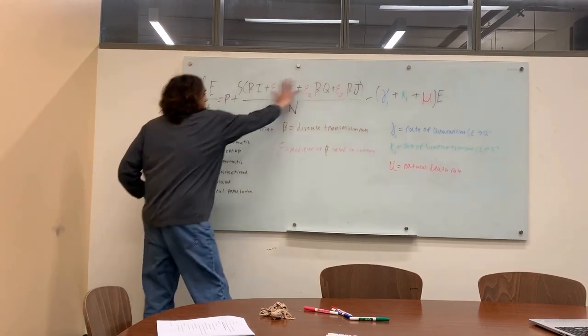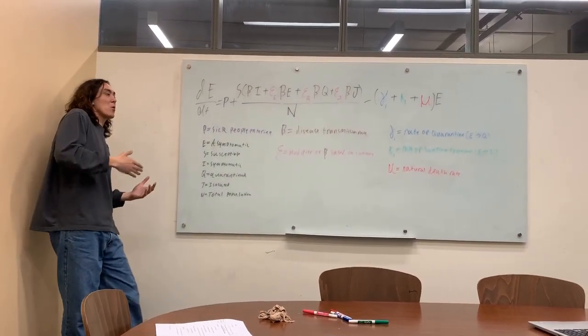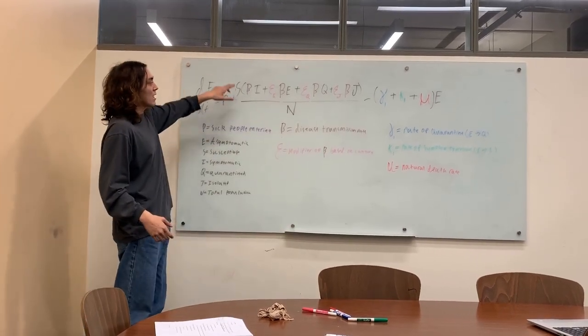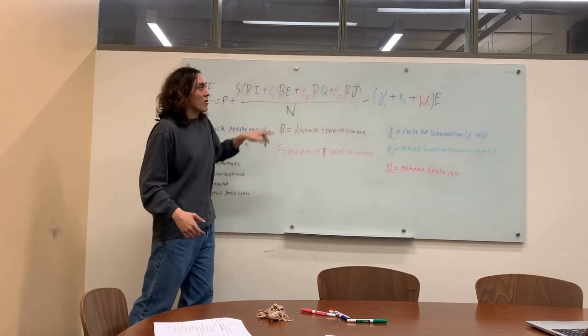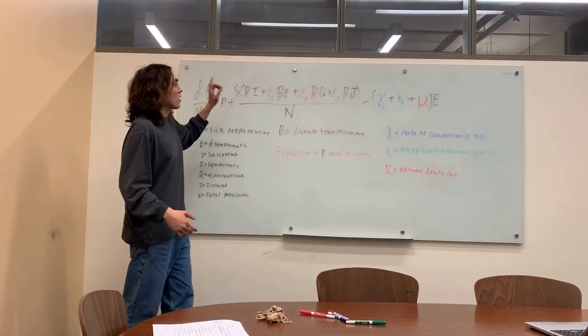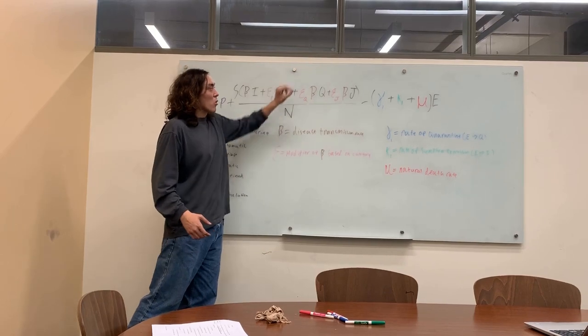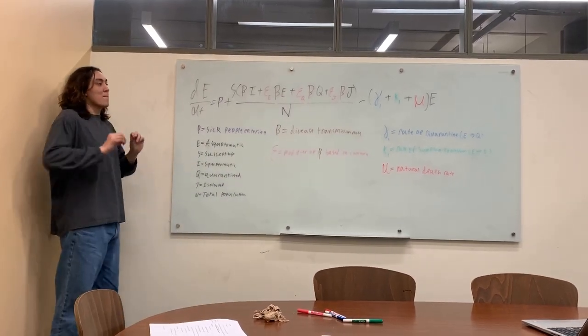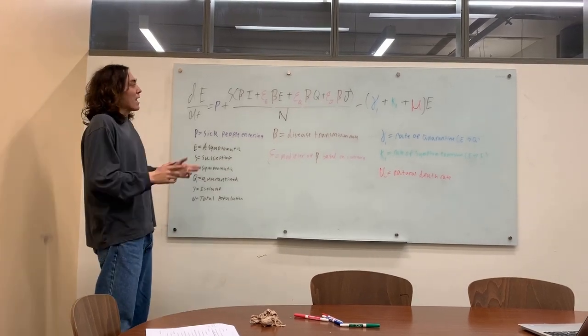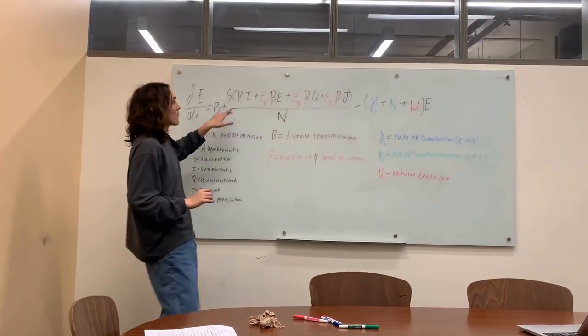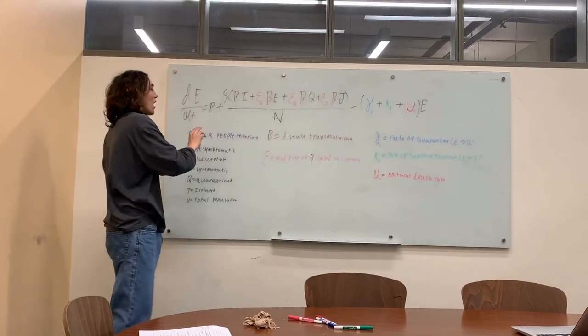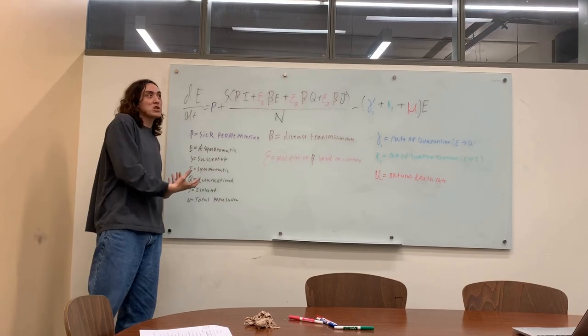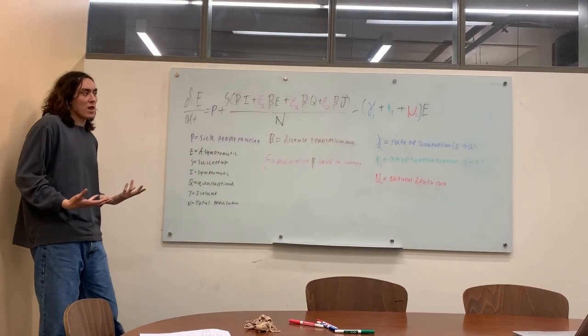We then have this whole thing, which is essentially the clause of people going from S to E. This is determined by the infectivity and the number of people in each other category that feed into E: symptomatic, asymptomatic, quarantined, and isolated. This is all controlled by beta, which is the base disease transmission rate. But while beta is the same for each one of these sub-clauses we have here, epsilon, which is a modifier of beta based on various things like hygiene within that category or isolation within that category, the modifiers for epsilon are different.